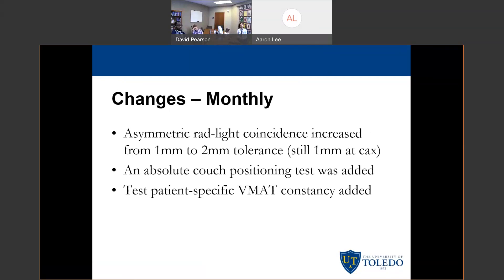Those were the daily changes. In terms of monthly, one thing they changed was the asymmetric light field coincidence — they increased it from 1 mm to 2 mm. This applies for off-axis when looking at a half-field blocked beam. Right along the central axis, it is still 1 mm. The reasoning is that it is very difficult to tell what the light field is unless you have a very precise light-detecting array, which most centers don't have, and even if you do, it probably doesn't have good enough resolution to meet that tolerance.